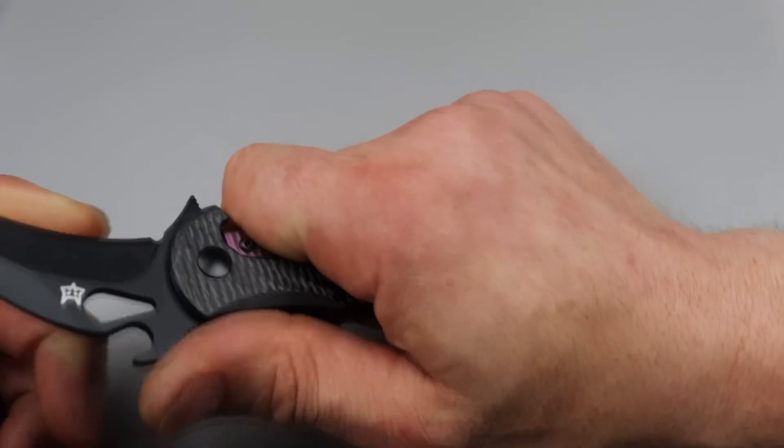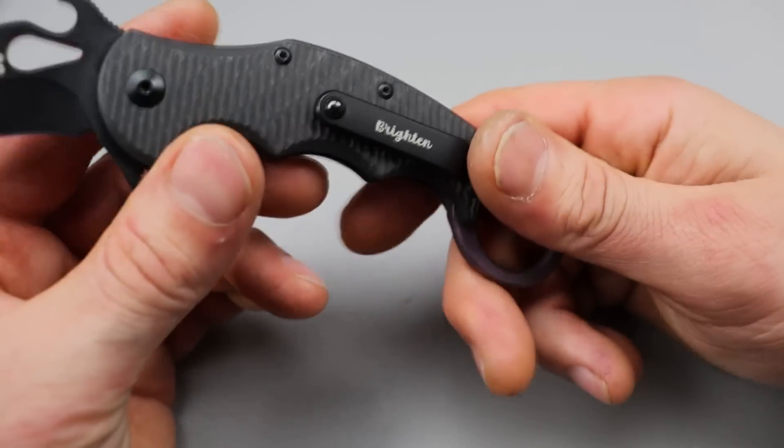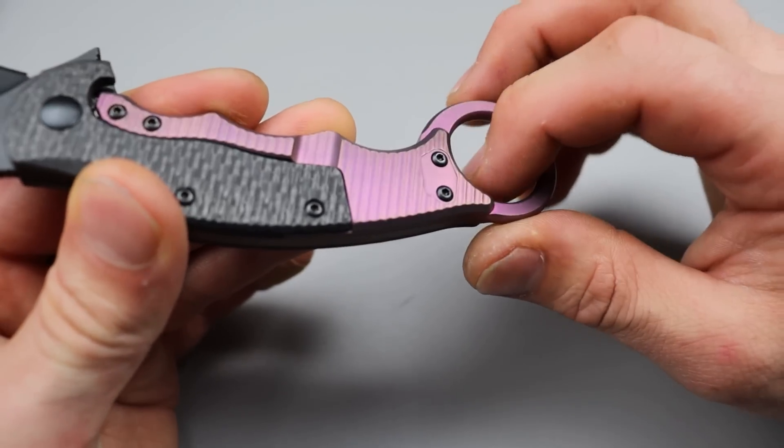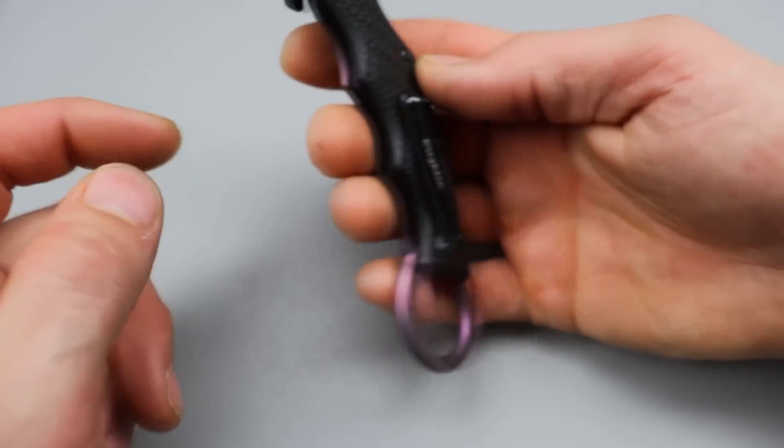The ergonomics on this handle are really, really good. They do have the titanium milled pocket clip, reversible, so you can flip it over if you want it in the forward grip like this. Or if you want it in the Karambit grip, you can also have it in this position.